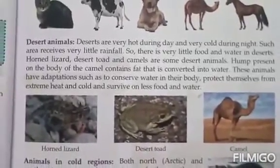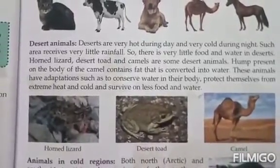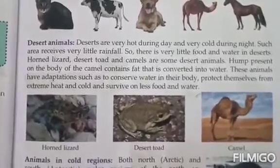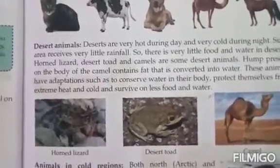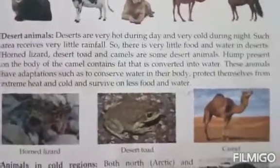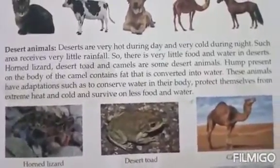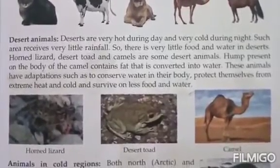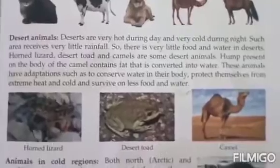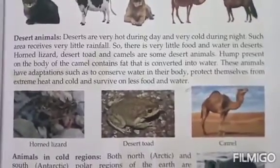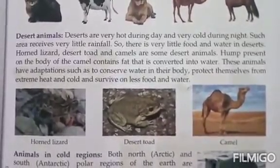Next, the third group: desert animals. Deserts are very hot during the day and very cold during the night. Such areas receive very little rainfall, so there is very little food and water in the desert. Horned lizards, desert dogs, and camels are some desert animals.